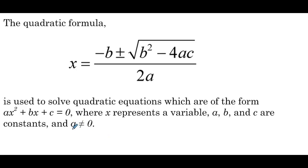I'm going to underline this last piece — it seems insignificant, why are we saying a can't equal 0? But it's actually pretty important. If a is equal to 0, then we really just have bx plus c, which means we don't have a quadratic. And if we don't have a quadratic, we don't need a quadratic formula. So it's really important that a is not equal to 0. b could be 0, c could be 0, but a cannot be 0.